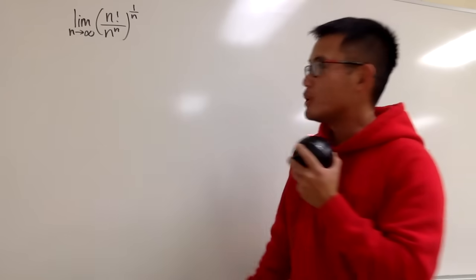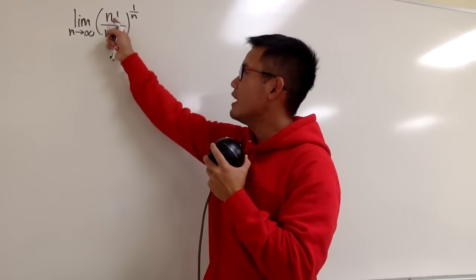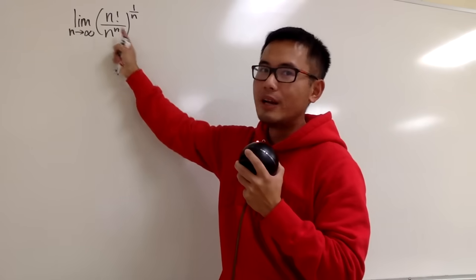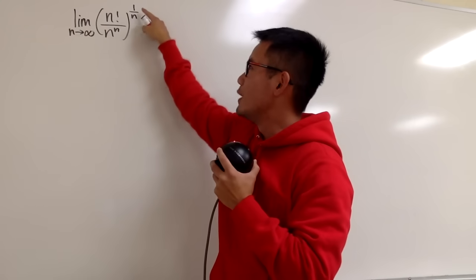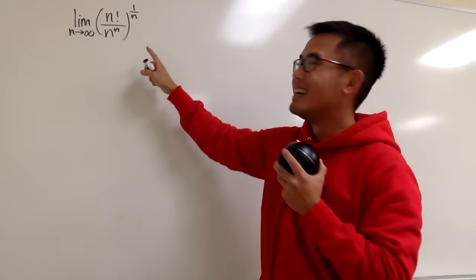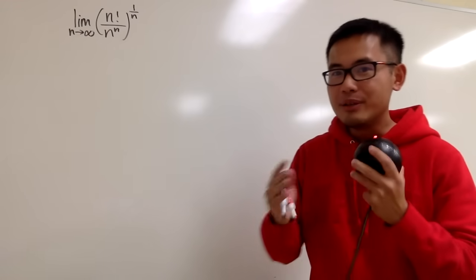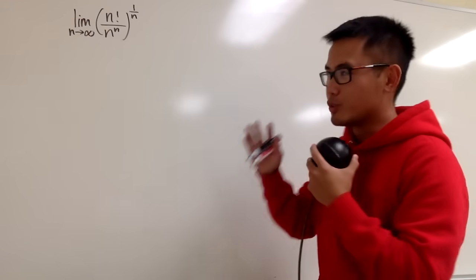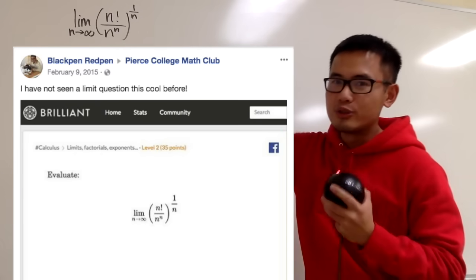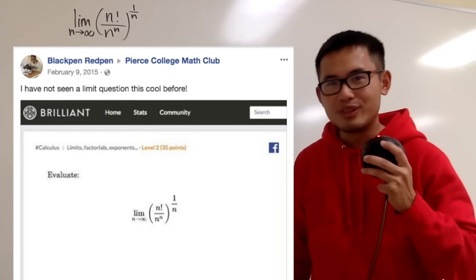Let's do some math for fun. We have the limit as n goes to infinity of n factorial over n to the nth power, raised to the 1 over n power. This looks pretty crazy, and you can see from the screenshot right here — I got this question from brilliant.org back in 2015.